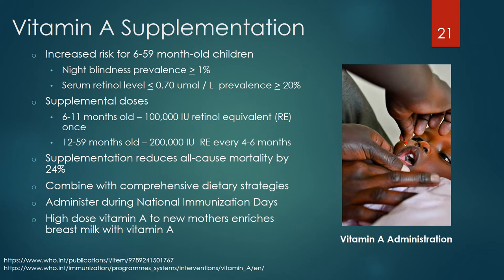The recommended dose is 100,000 international units of retinol equivalent once for those 6 to 11 months old, and 200,000 international units of retinol equivalent every 4 to 6 months for those 12 to 59 months old. That intervention has been shown to reduce the risk of all-cause mortality by 24%. Combining vitamin A administration with immunization services is an important part of efforts to eliminate vitamin A deficiency. Providing high-dose vitamin A supplementation to mothers soon after delivery provides a further benefit to young infants through enriched breast milk.